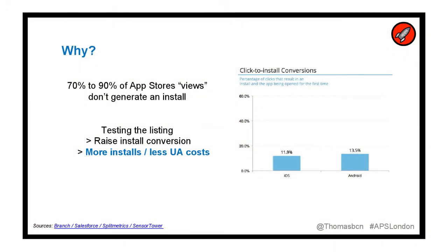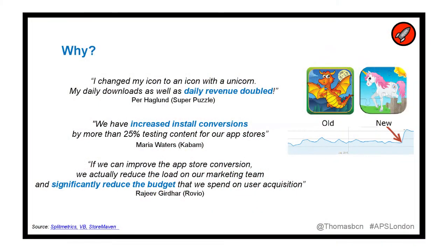Today I'll be talking about a very specific topic: the conversion between people who view your app and people who download. The big problem here is that the drop-off is massive — 70 to 90% of people who view your listing will not install your app. What can you do about it? Test the listing more. That way you can not only get more installs, but higher conversion will eventually mean you're paying less CPI. People from Rovio are saying you can reduce the budget on user acquisition. There's an indication that just putting a unicorn in an icon doubles revenue.